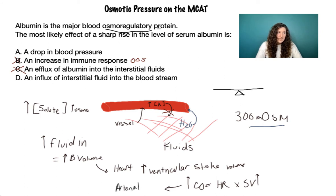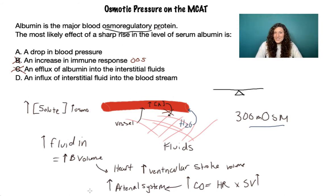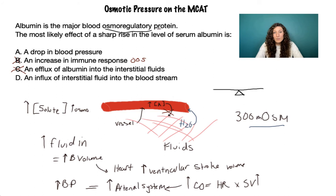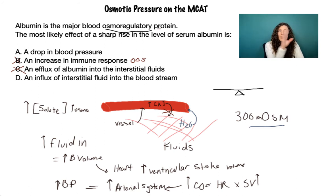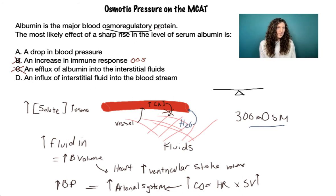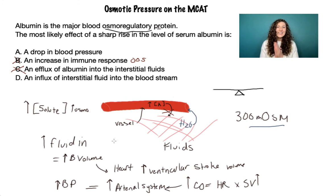Cardiac output equals heart rate times stroke volume. So if we increase stroke volume, we also increase cardiac output — meaning more blood is leaving the heart into the arterial system. In the arterial system, which is stiffer and doesn't expand as much as the venous system, increased cardiac output increases pressure on the artery walls, which means increased blood pressure.